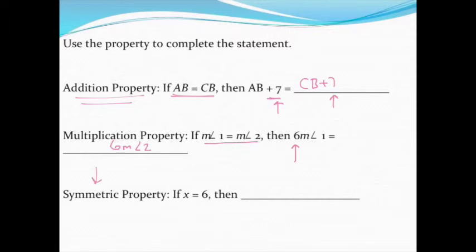Last up we have the symmetric property. Remember that sort of took something and folded it back over on itself. They give you the statement x = 6, so using the symmetric property we can also say that 6 = x if I flip it around.